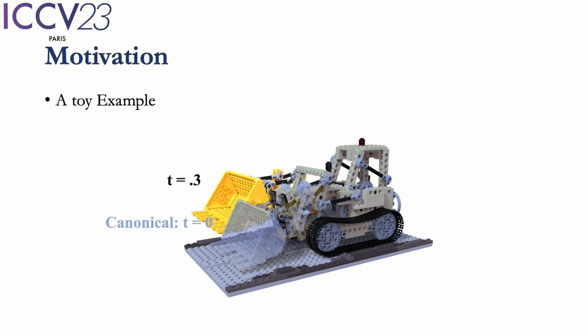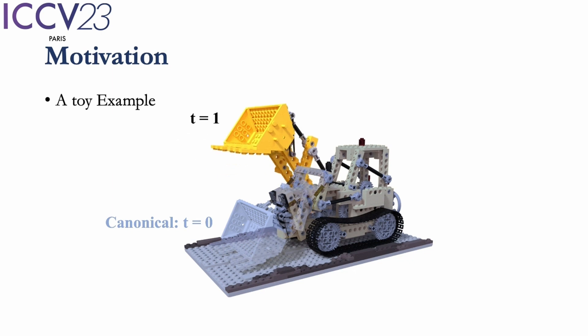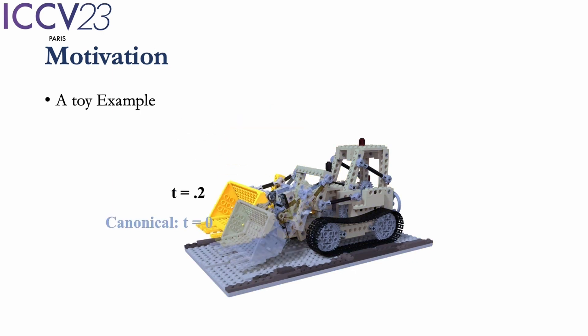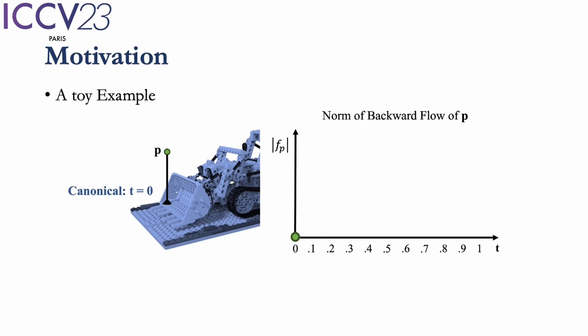Here we have a toy example. In this scene, the LEGO loader shovel lifts over time. We set time 0 as canonical time and show the scene at canonical time with dark blue color. We pick a fixed 3D point P in the space and show the backward flow of point P, which moves its position at time t back to its corresponding position at canonical time.